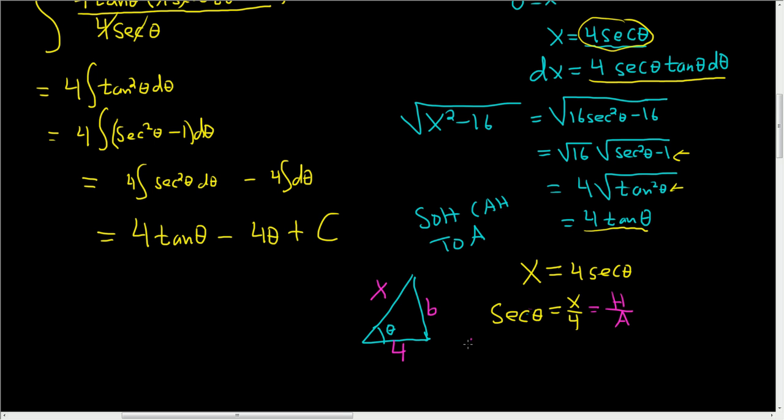If we call this side b, we can use the theorem of Pythagoras to find b. Subtracting 4 squared, we get x squared minus 16 equals b squared, and so b is the square root of x squared minus 16.